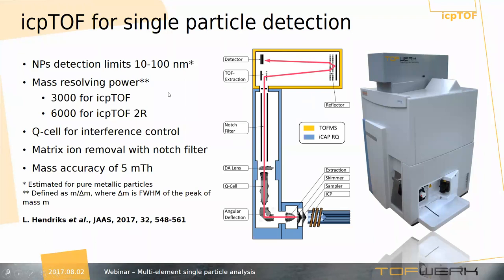I'd like to list some properties of the instrument important for single particle detection. Because we start with the sensitive optics and ICP interface of the ICP-Q, we can reach detection limits for pure metallic particles in the range from 10 to 100 nanometers. Time-of-flight typically has much higher resolution than quadrupoles — our ICP-TOF has a resolution of 3000, and our new product ICP-TOF-2R has a resolution of 6000. There is also an option to deal with interferences using a collision reaction cell in the form of a Q-cell.